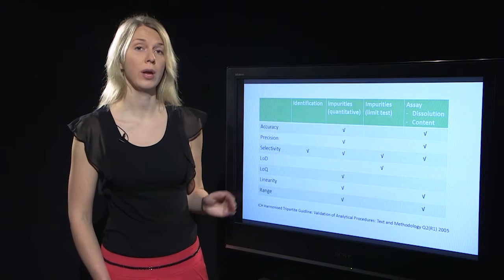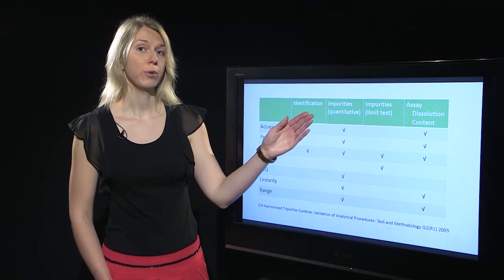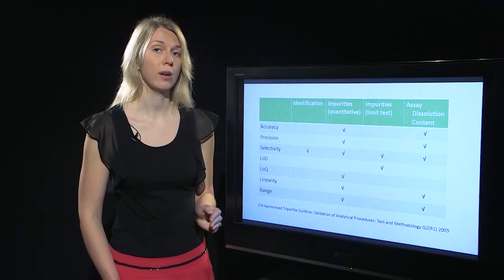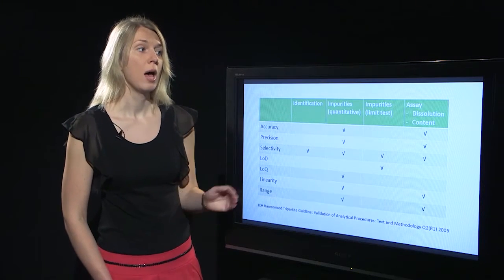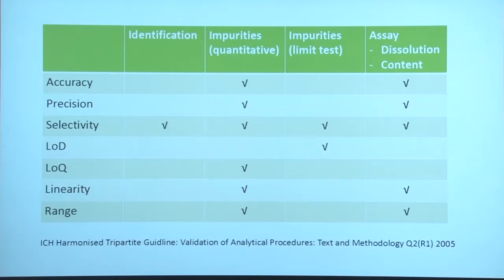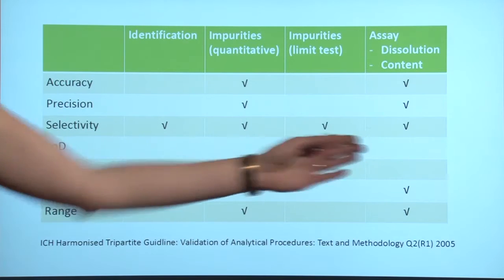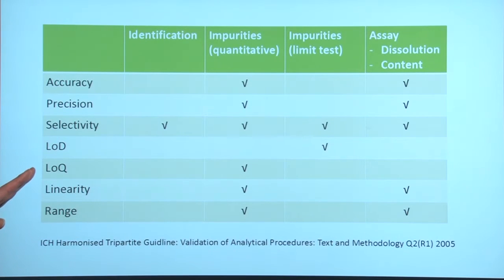But also, when we compare quantitation of impurities and main components, we can also see differences. The main components are usually present in large quantities in the samples. Therefore, for such methods, limit of quantitation is not required to determine during validation.